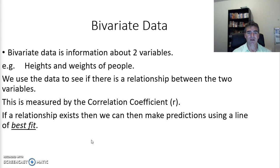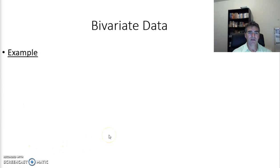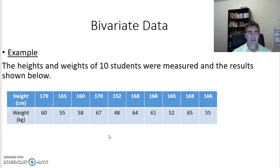That's what we usually do with statistics and data - we're trying to use it to make some sort of prediction in the future. Let's turn to an example. We're going to look at the heights and weights of 10 students. One student here was 179 centimeters tall and weighed 60 kilograms. The next was 165 centimeters tall and 55 kilograms.